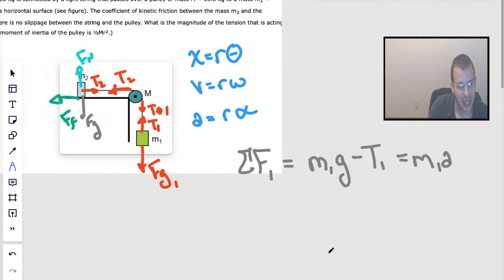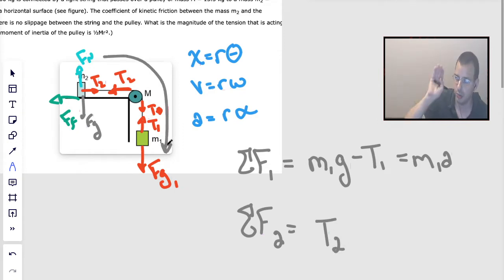I'm going to jump ahead here to mass 2. I want to do all the linear first, then the angular, just to keep my feng shui going. Pulling it to the right is tension 2, kind of like the positive direction because they're all moving together. Tension 2 minus force friction.